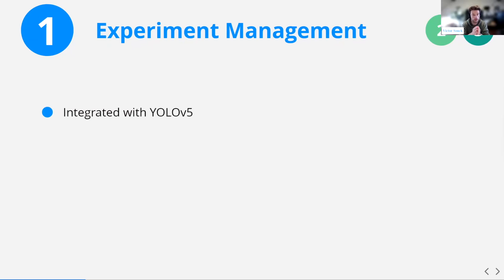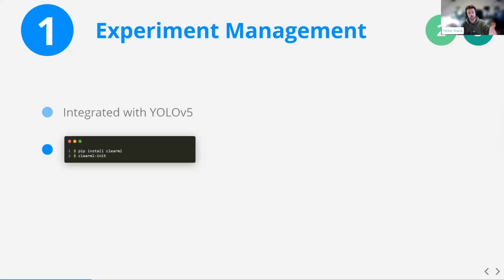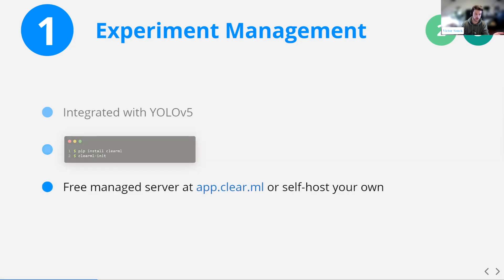Experiment management is already integrated with YOLOv5. If you've checked out YOLOv5 recently, you've probably seen ClearML in there. The only thing you have to do is run a pip install clearml and then a clearml init command. Once you do that init command, the system knows it should communicate with your server. You can get a free managed server at app.clear.ml, or since we're fully open source — not just the package but the full server with web UI — you can self-host your own.